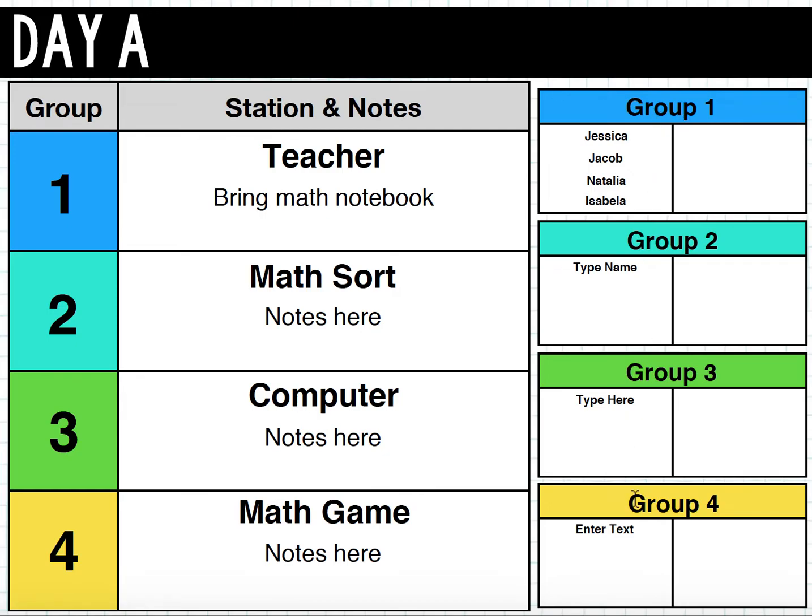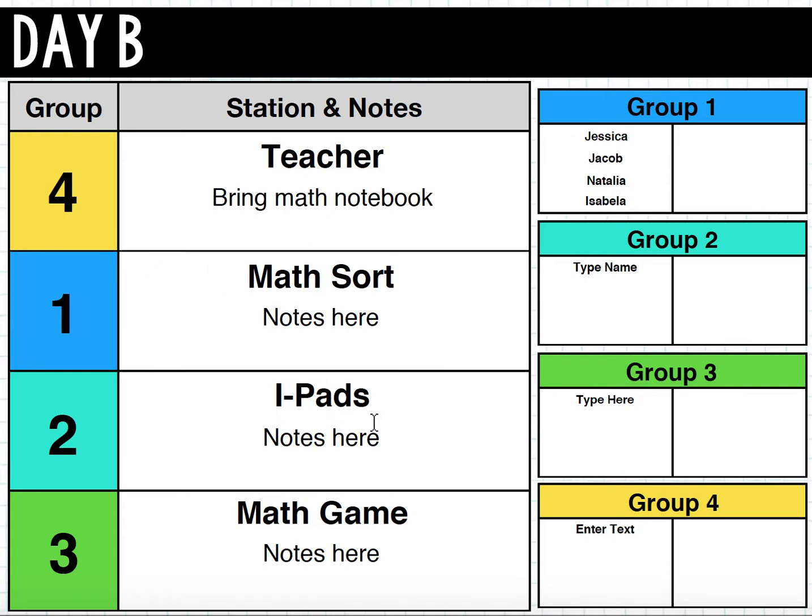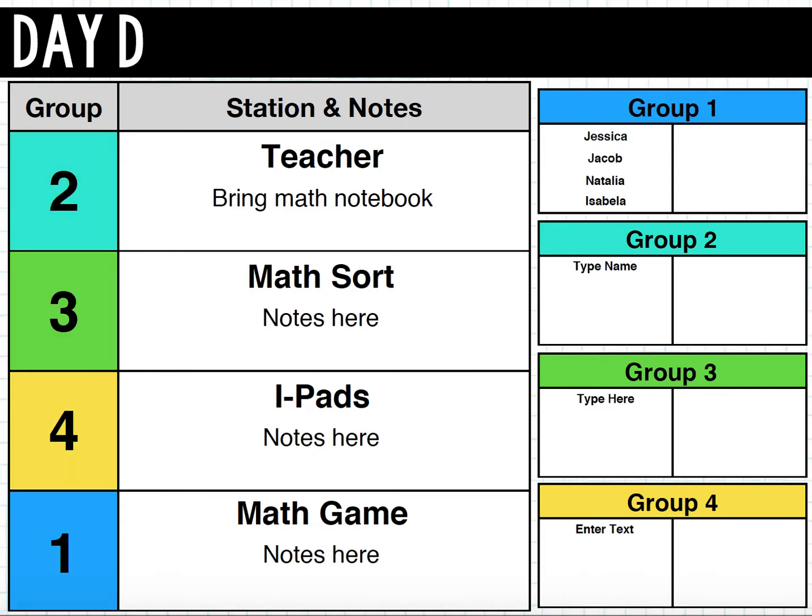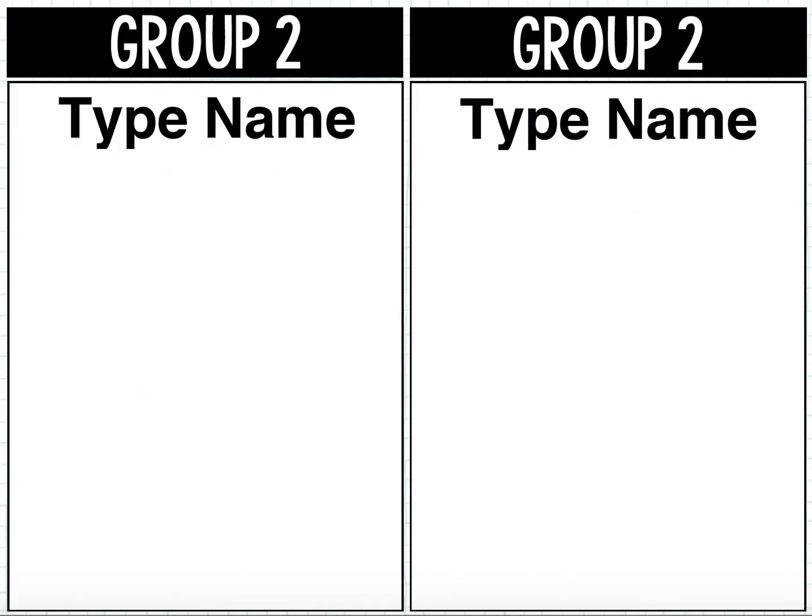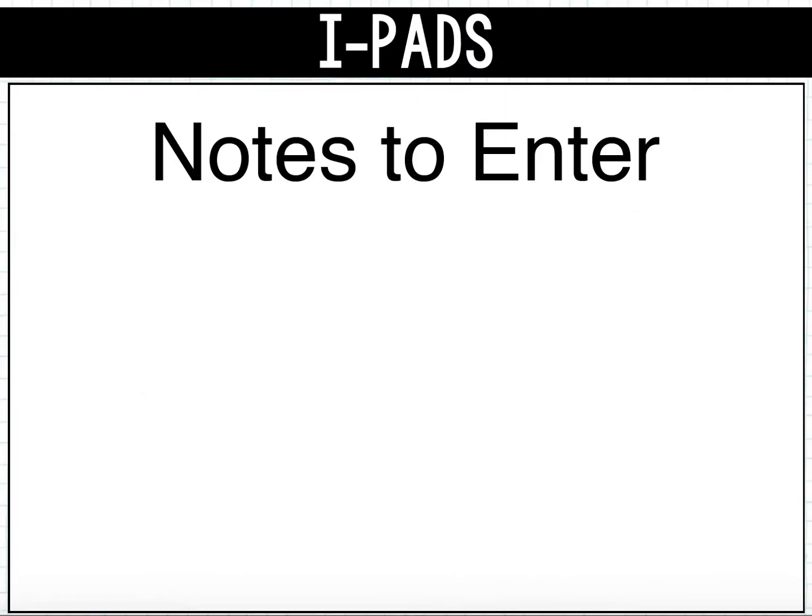Okay, so once you have all of the names entered, decide what four stations you want to have. Maybe you don't have computers, but you have iPads. Again, that station will be automatically changed on each page, and also on the printable version. So let me scroll down. Here it used to say computers. Now it says iPads.